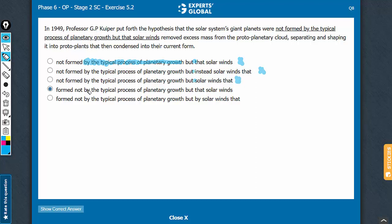It's between D and E now. Formed has been taken before not in these cases, so the construction becomes that planets were formed not by A, but by B. Still, by is needed. Answer choice D also does not have a by here. D can go.